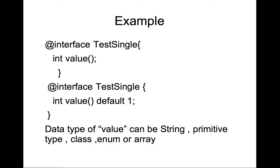This is the way we can use the annotation using the '@interface' keyword — we must use this format for creating a custom annotation. The member name 'value' is already predefined. Inside the parentheses you supply no parameters. The data type can be anything: it can be a string, a primitive type, a class, an enum, or also an array of those things.